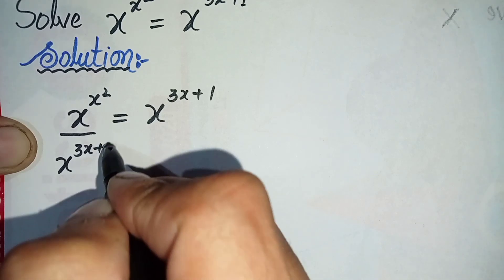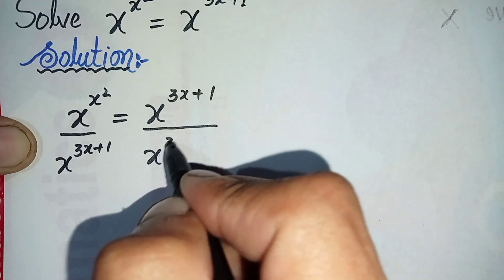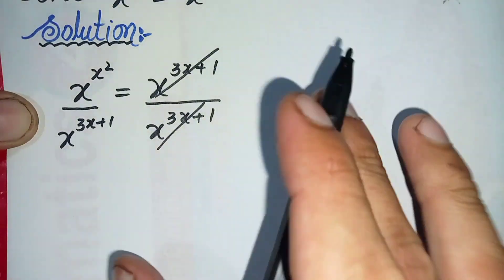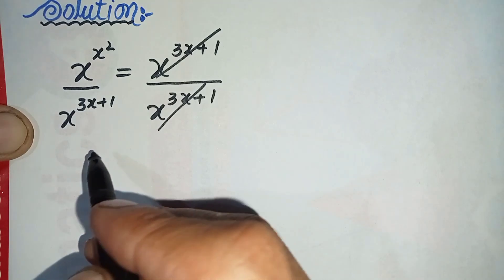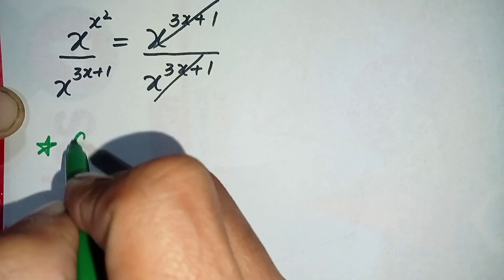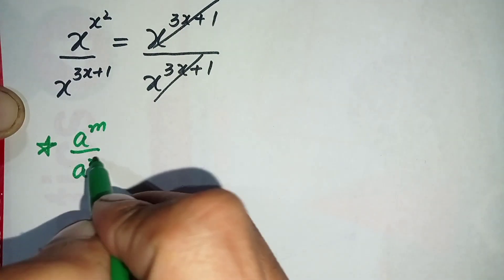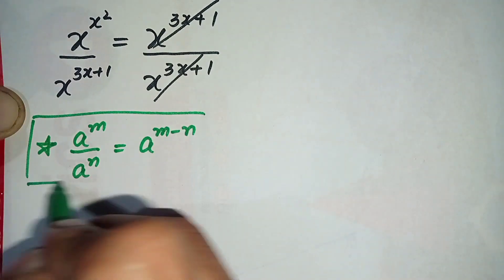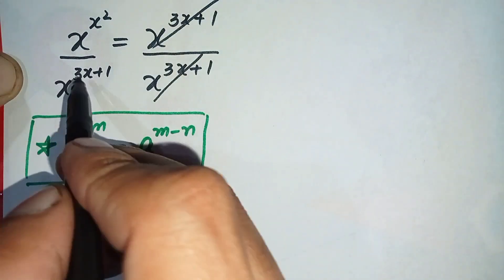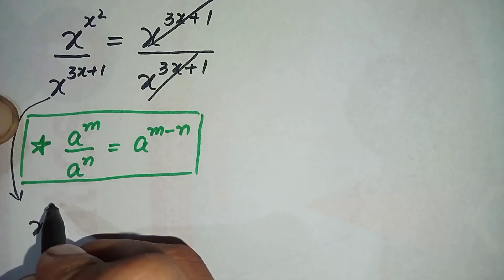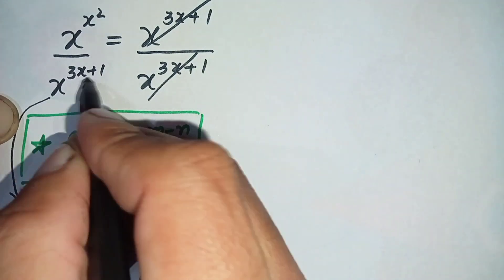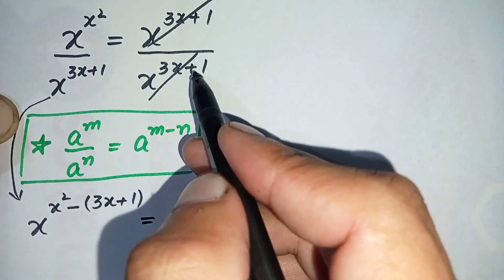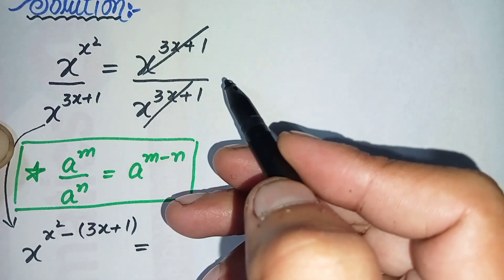We divide both sides by x raised to power 3x plus 1. On the right-hand side this expression cancels, leaving only 1. On the left-hand side we use the same base formula: aˢ to the power m divided by aˢ to the power n equals aˢ to the power m minus n. Using this formula, the equation becomes x raised to power x² minus (3x plus 1) equals 1.